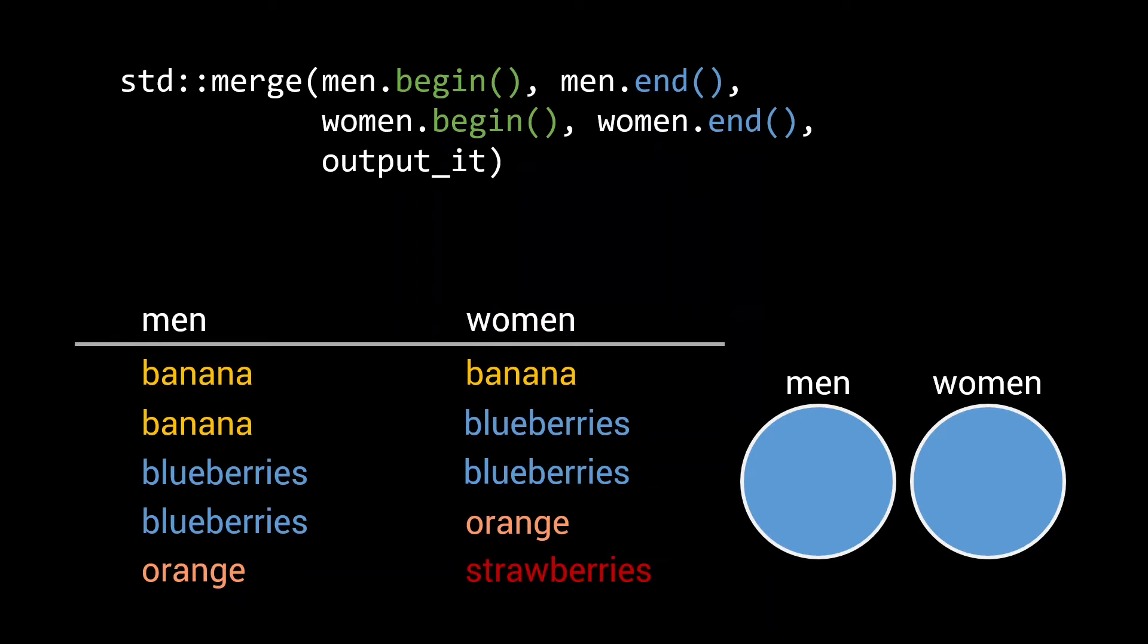Standard merge can be used to merge two sorted ranges. It is not a set operation, but since, for the sake of these algorithms, a set is the same as a sorted range, we can also use it to merge sets.